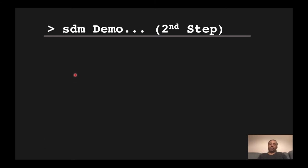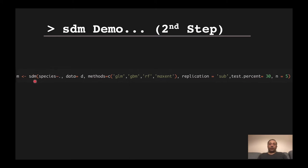In the second step, after generating the sdmData object, we use the 'sdm' function. In the sdm function we again have a formula where we can specify the species name, predictor names, or different feature forms. We introduce the data object as the second argument. In the third argument we can specify the names of different modeling algorithms — it can be only one or all 19 available. In this example we specify four algorithms.